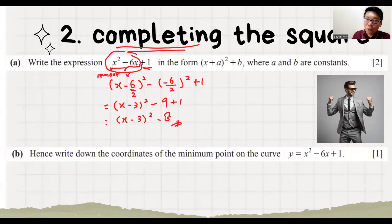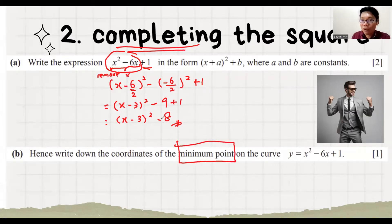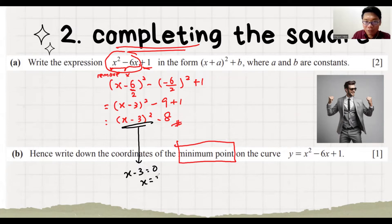For this type of question, you need to find the maximum or minimum point of the quadratic. Once you have the completing the square form, for the x value of the turning point, the bracket part must equal 0, giving x equals 3. Then the y value is just copied from the constant, which is minus 8. So the coordinate of the turning point is (3, minus 8). Done.